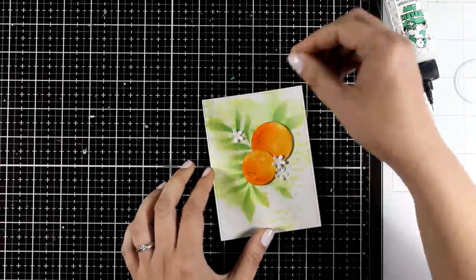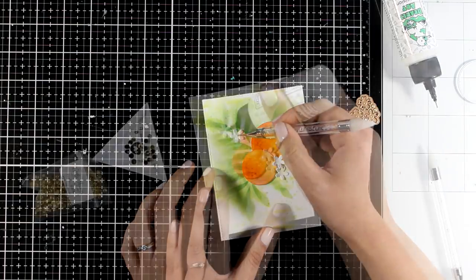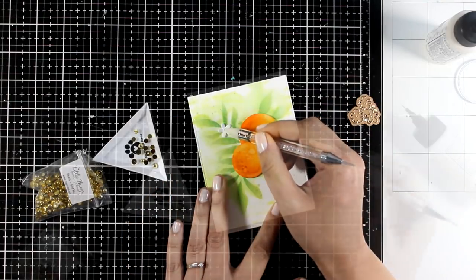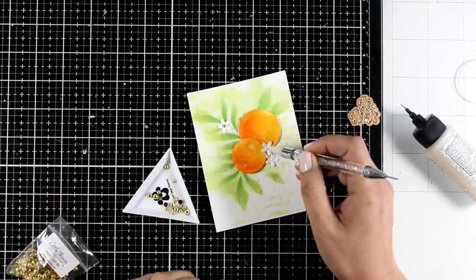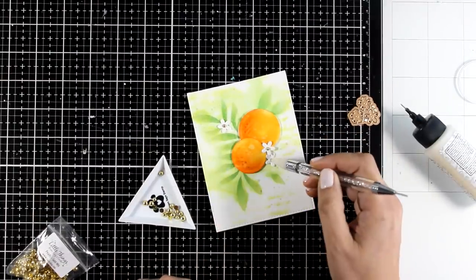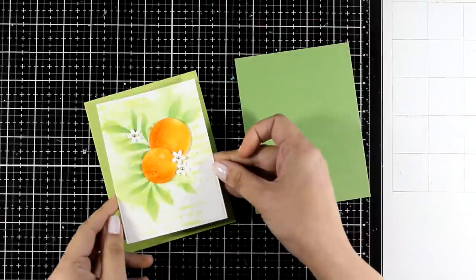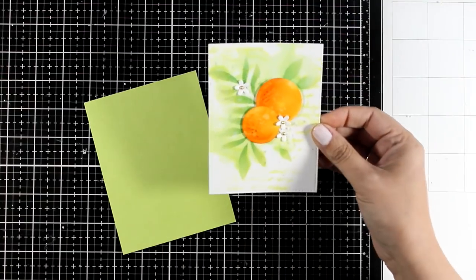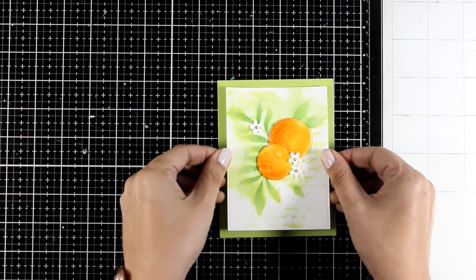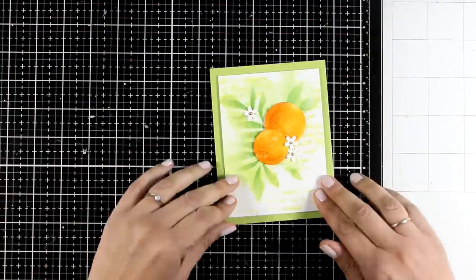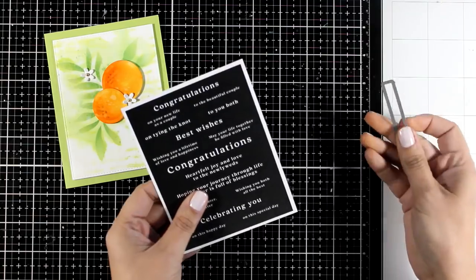And in the center of the flowers I'm going to stick tiny little golden pearls. So at this stage my panel is pretty much ready. I need to find a card base that matches this beautiful background. I was debating between those two cardstock panels. I decided to go with a lighter one, and I do have foam tape at the back so it is raised. For my sentiment I chose to go with the ready-made sentiment strips. I just cut out the one that says Best Wishes.